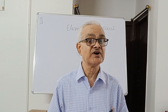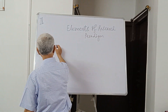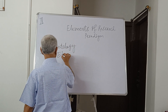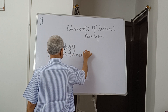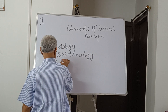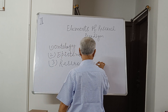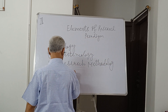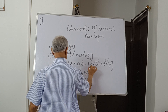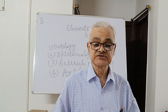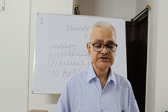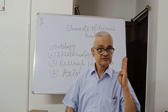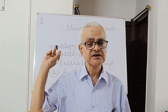Usually, most of the research literature identifies ontology, epistemology, and research methodology as the three key elements of research paradigm. These are the three elements: ontology, epistemology, and research methodology.